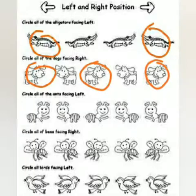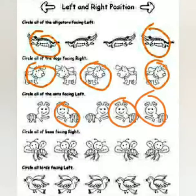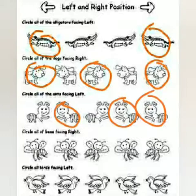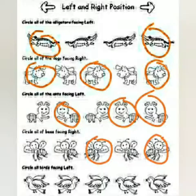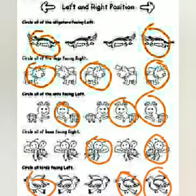Now we're going to circle the ants looking left. Choose the ants before we circle them. Now we need to circle the bees facing right. Pick your answers before I circle them. We have two bees facing right — one, two. Great work Year 2. So how many birds are facing left? One, two, and three. Excellent work Year 2.